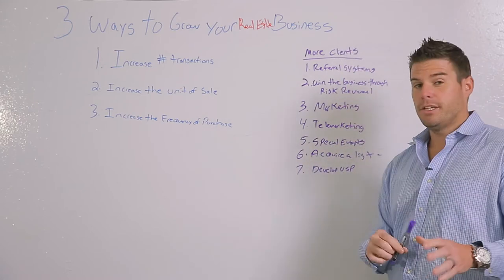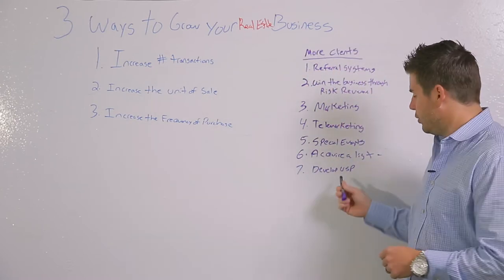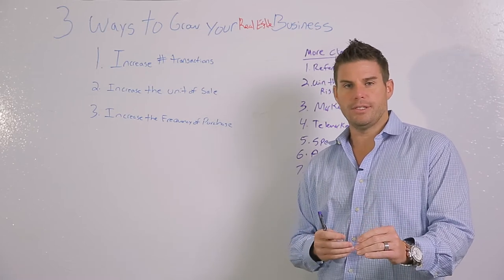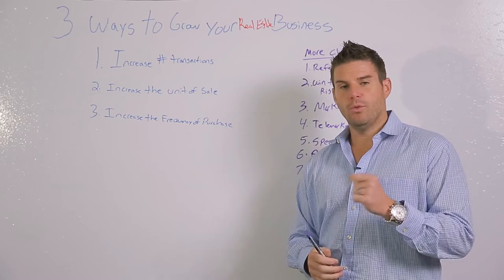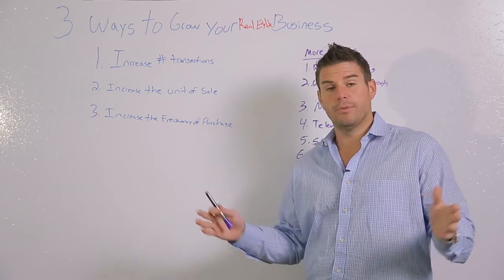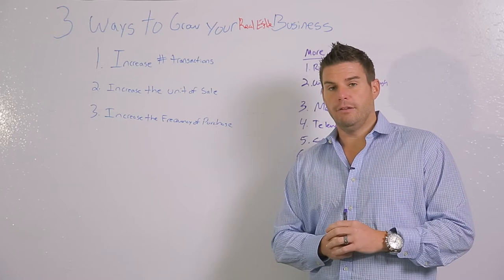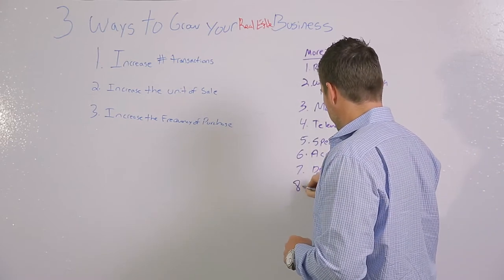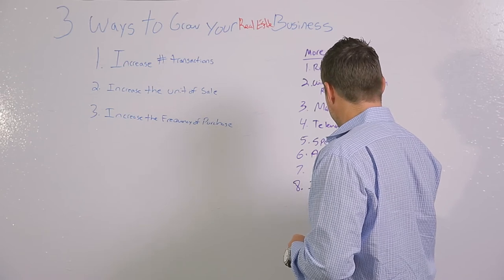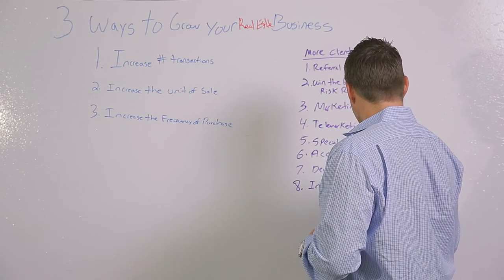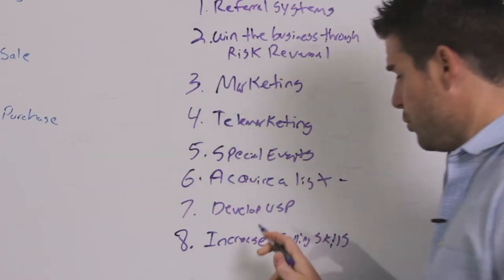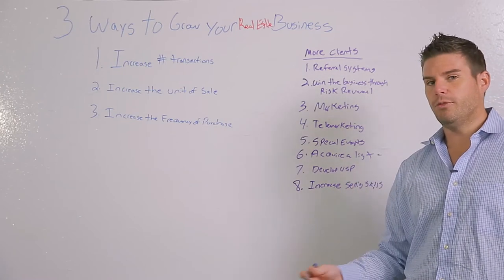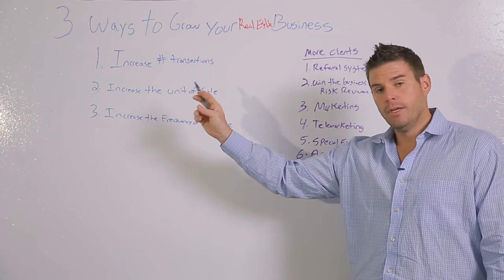Number seven is developing a USP — your unique selling proposition. What is the reason people should call you in the first place? You have to have a compelling reason. If I asked you why I should hire you above your number one competitor or do something else entirely on my own, and you don't have an answer for that when you're talking to a buyer or seller — that leads to the next one, which is increased selling skills. Once you have a USP, increasing your selling skills gets you more. If you talk to 10 people and sell two now, if we can get you to four, you do more deals.